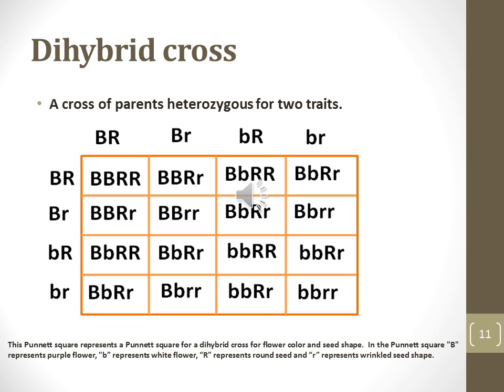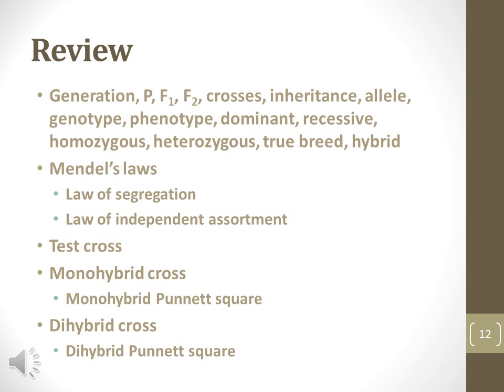Dihybrid crosses are similar to monohybrid crosses, only with two traits. The cross shown in the diagram explains that one sixteenth of the first generation is an organism expressing the double recessive phenotype. This is a review of the key terms relating to Mendelian genetics. The laws of segregation and independent assortment may be tested with monohybrid and dihybrid crosses.